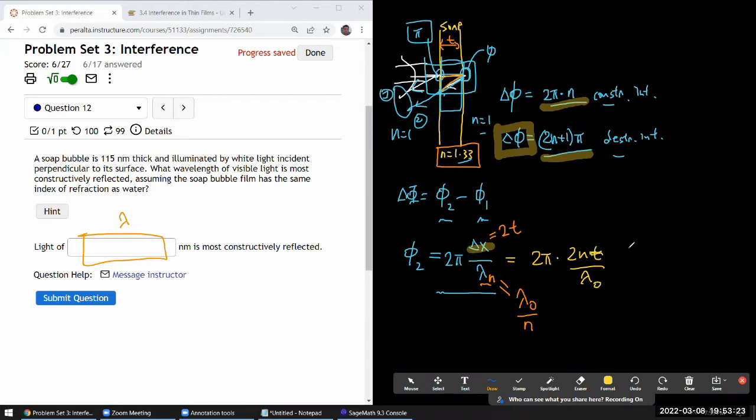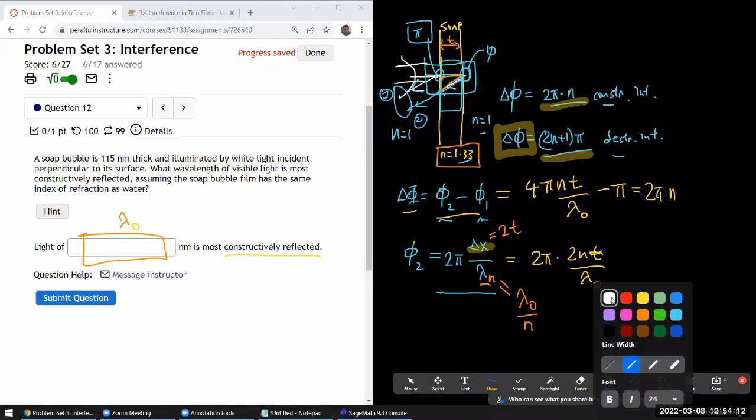So with those fractions in mind, this is what the expression for phi2 is. It's 2π times 2nt divided by lambda naught. And remember, t is thickness, not time. I have that. And I already have phi1. So let me write out this expression for delta phi. That's going to be 2π times, or let me simplify it as I write. It's 4πnt over the vacuum wavelength, which I will be entering here, minus π. And we are looking for constructive interference. So this is going to be some even, or the integer multiple of 2π.